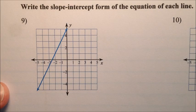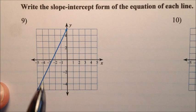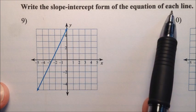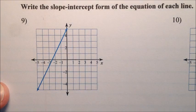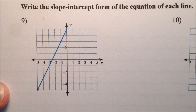In this video, I'm going to discuss Problems 9 through 16 from the Chapter 2 Exam Review. In these problems, we're told to write the slope-intercept form of the equation of each line. In problems 9 through 12, we'll be given a graph, and in 13 through 16, we'll be given some information about the line and then write the equation that way.